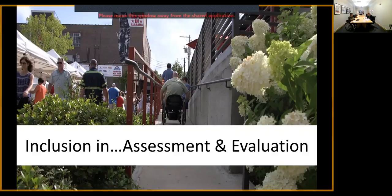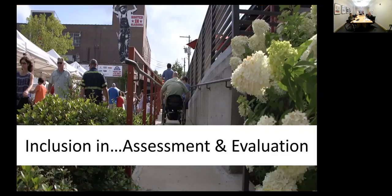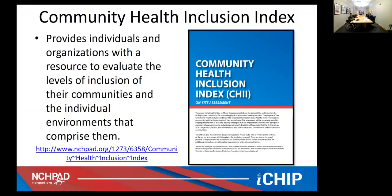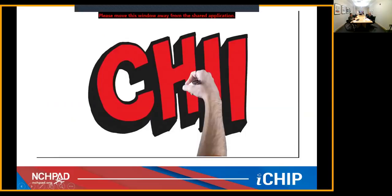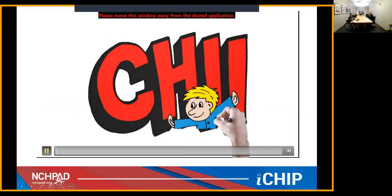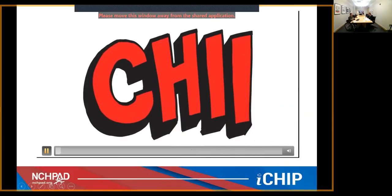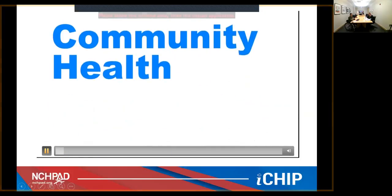The first element is inclusion in assessment and evaluation. In this section you'll find resources that help you gather information on the extent to which your resource or built environment is inclusive of all members of the community, including those with a disability. We have the Community Health Inclusion Index — CHI. The CHI, with two I's, stands for Community Health Inclusion Index and is a tool aimed at improving your community so that it's healthier and more inclusive to people with disabilities.